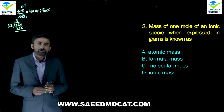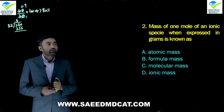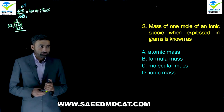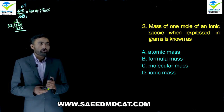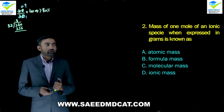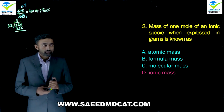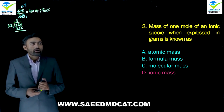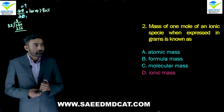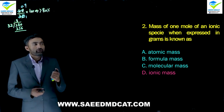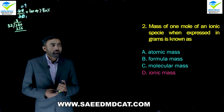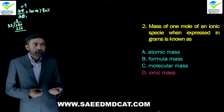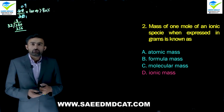The word 'ionic species' is important here. If you represent the mass of an ionic species in grams, you call it the ionic mass. This is also called gram ion or molar mass. So delta option is correct — the mass of an ionic species in grams is its ionic mass.